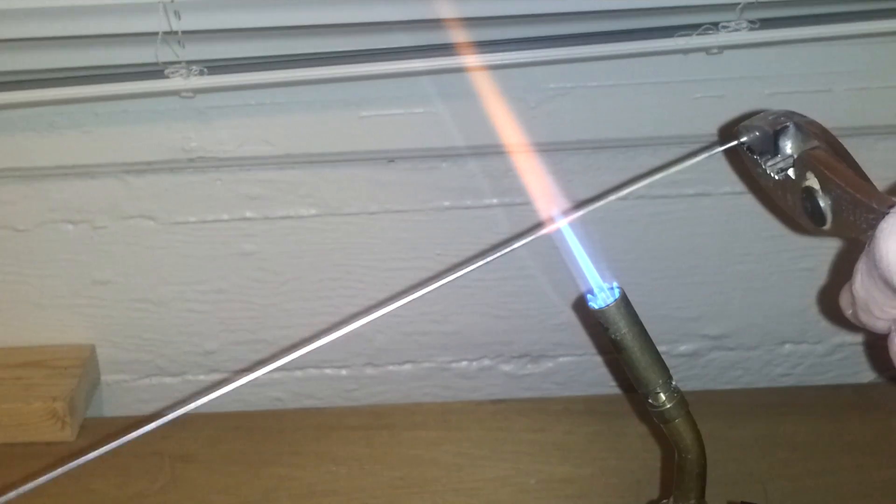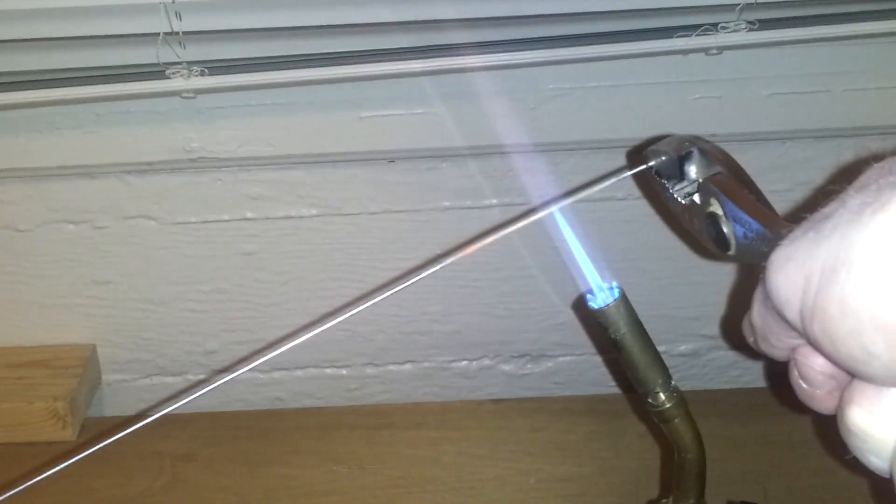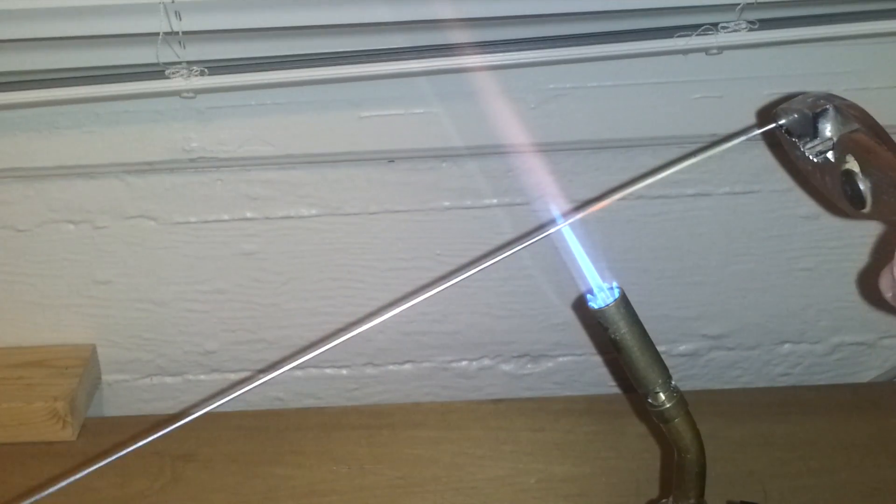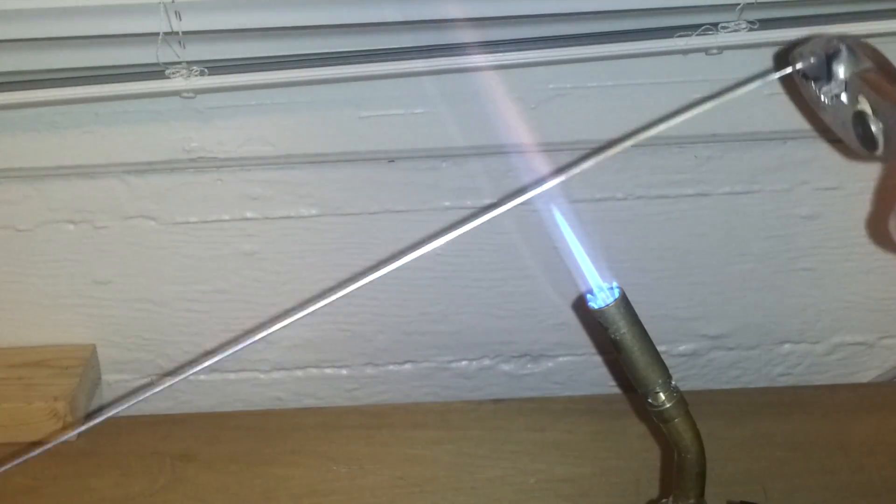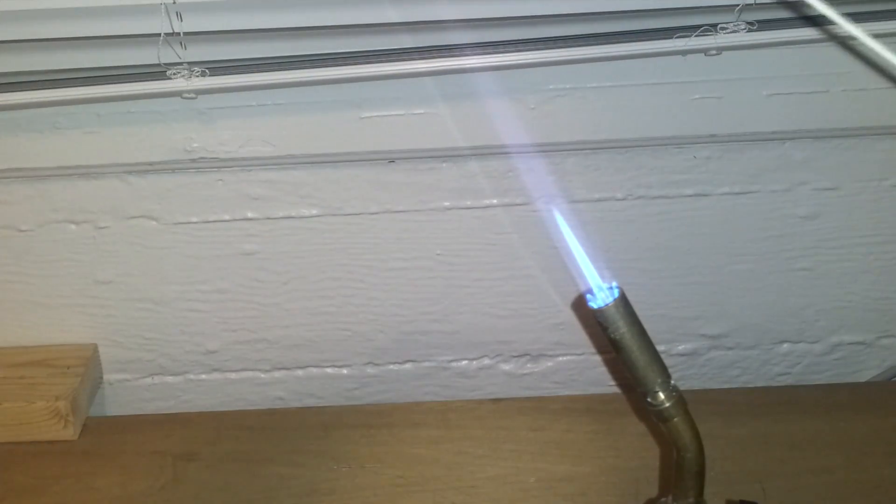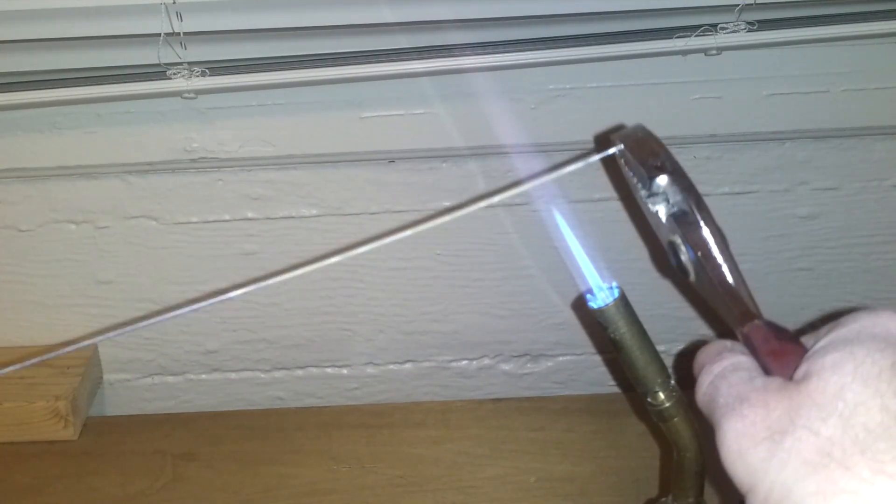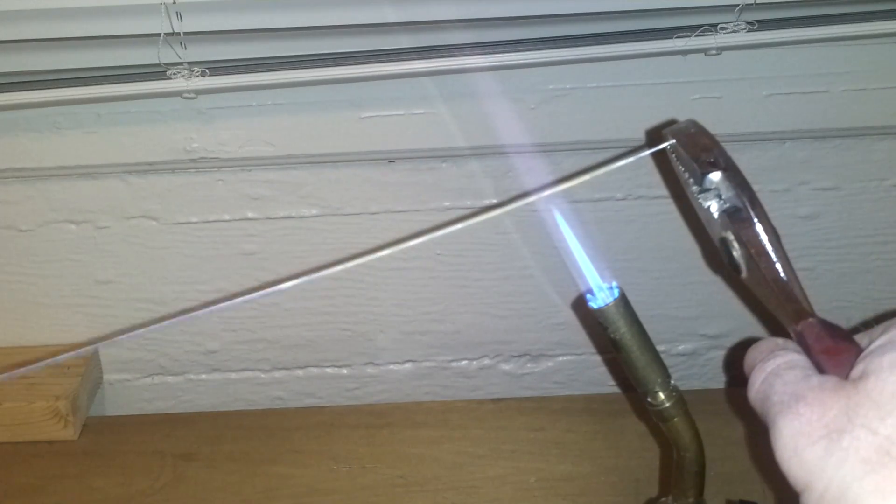And this will heat treat this galvanized steel wire and make it very hard and springy rather than bending. It also helps to have two pair of pliers so you can turn it if it starts to bend. You don't want to heat it up too much on one side.